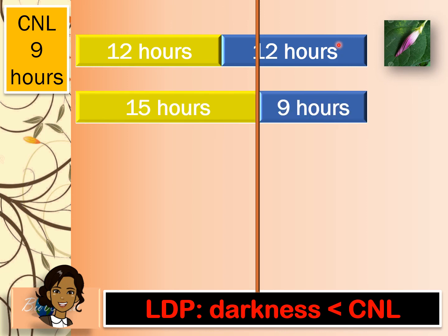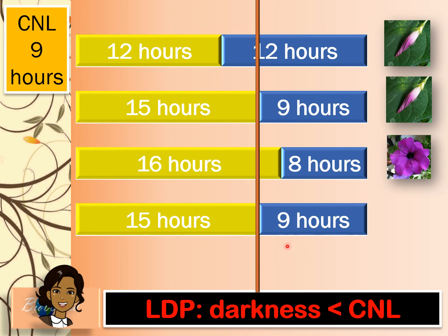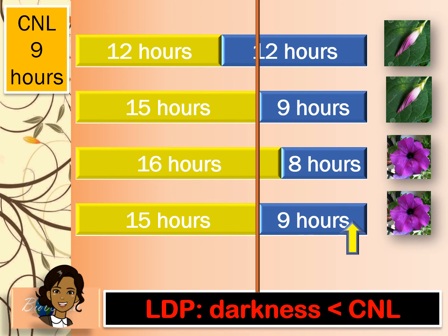Similarly, if I provide the long day plant with 9 hours of darkness — equal to the critical night length — flowering will still not occur, because the rule is that relative darkness must be less than the critical night length. When I expose the plant to 8 hours, which is less than the critical night length, flowering finally occurs. There is also a special case: if the plant has 9 hours of darkness and I insert a flash of light in that darkness, the amount of continuous darkness becomes less than the critical night length, and therefore flowering will occur. You need to digest all of this before moving on.